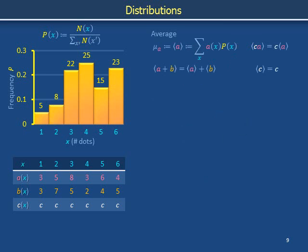We have explored the definition of the average and some related identities. The average is sometimes regarded as a typical value of a distribution, but it is important to remember that not all outcomes coincide precisely with this value. We now develop a statistic for describing typical excursions from average. We begin with a naive concept of a deviation: delta a is defined as a particular value of a minus its average value mu sub a. The average of the deviation from average is always 0, because the average of a sum is the sum of the averages, and mu sub a is a constant whose average is itself.